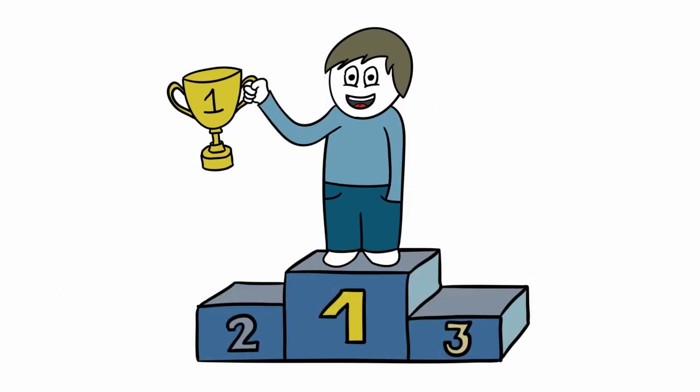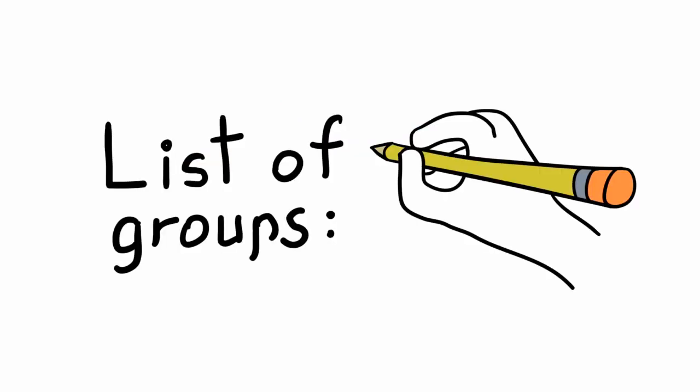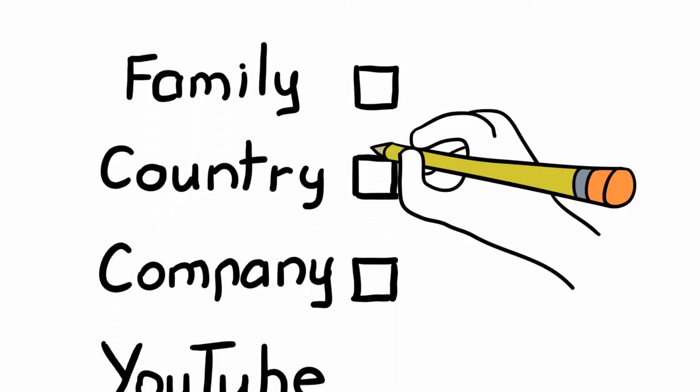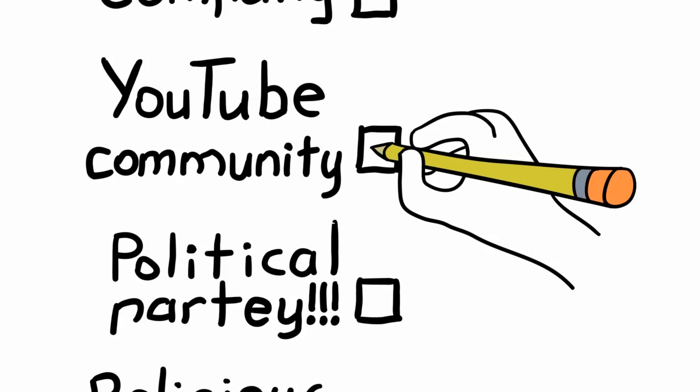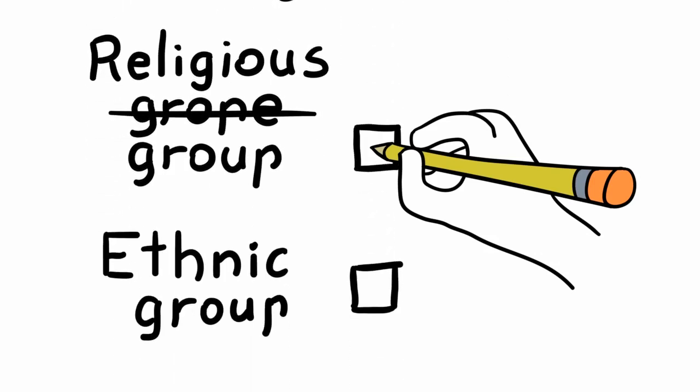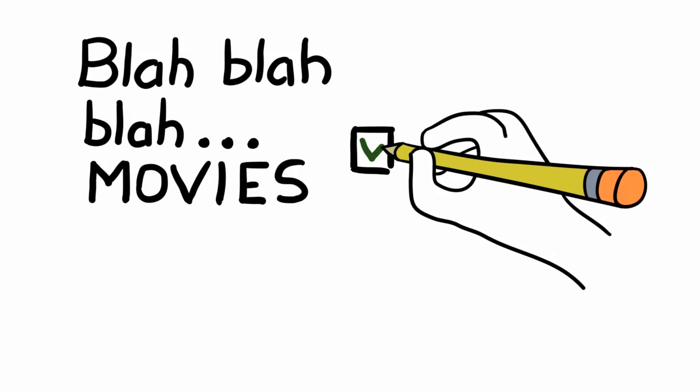And it doesn't really matter which group of people you choose to view as your tribe, it can be your family, your country, your company, YouTube community, political party, religious group, ethnic group, or a group of people that like the same type of movies.